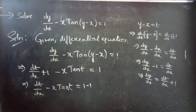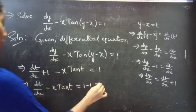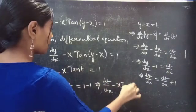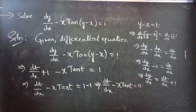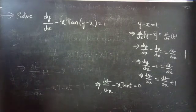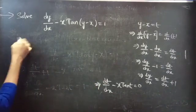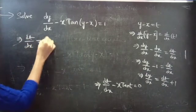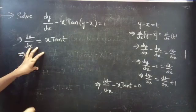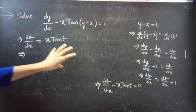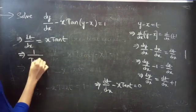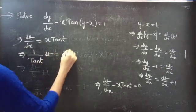Then dt/dx minus x·tan(t) equals 1. Taking 1 to the right-hand side gives 1 minus 1 equals 0, so dt/dx minus x·tan(t) equals 0. This can be written as dt/dx equals x·tan(t). We separate variables: (1/tan t)·dt equals x·dx.